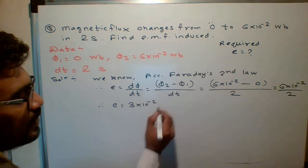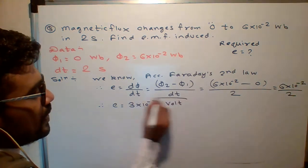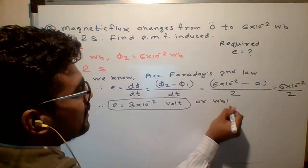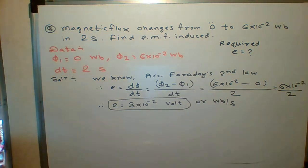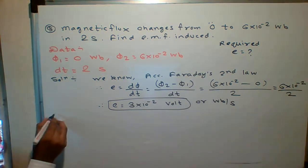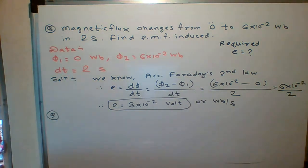What is unit of E? E ka unit hota hai volt. Either you can write volt or Weber per second. Either way. Hope you understood this particular numerical. It's really easy numerical. Please copy.